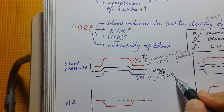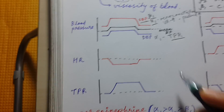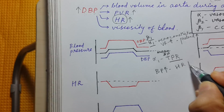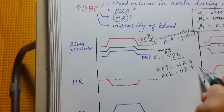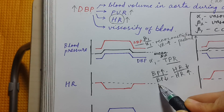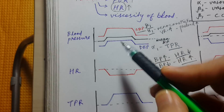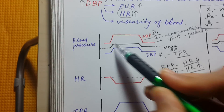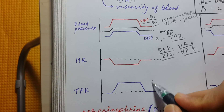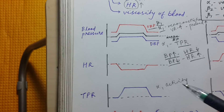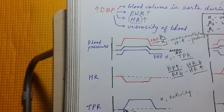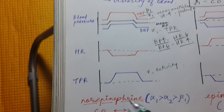Diastolic blood pressure increases because of alpha-1 activity, which increases total peripheral vascular resistance. Whenever blood pressure increases, heart rate always decreases because baroreceptors sense it and through vagal output decrease the heart rate. So here, when mean blood pressure increases, heart rate decreases due to reflex bradycardia. Total peripheral resistance increases due to alpha-1 activity, and diastolic blood pressure correlates with it.